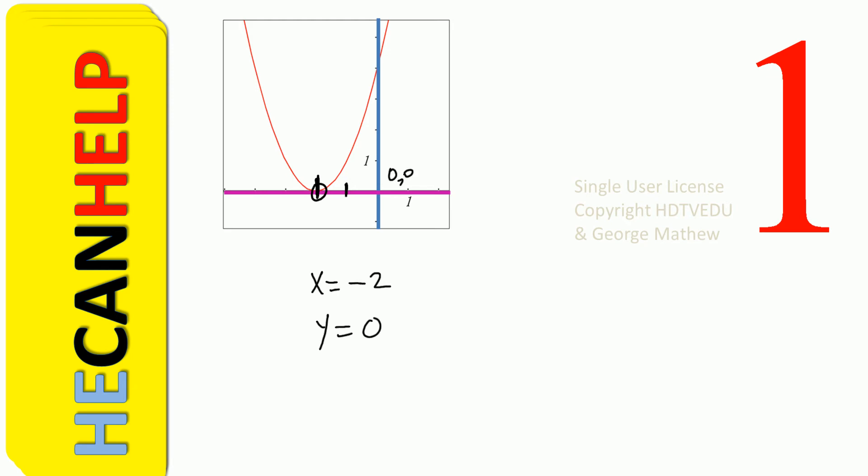This is our origin. When x equals negative 2, y is equal to 0. What is our ordered pair? x comes first. Negative 2, and what is y? When x equals negative 2, y is equal to 0.